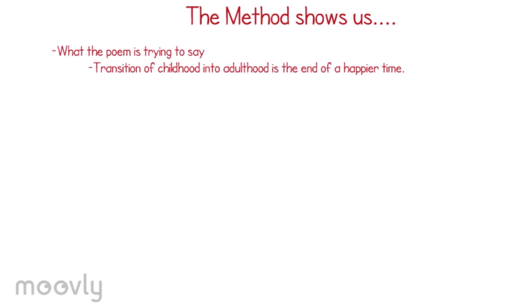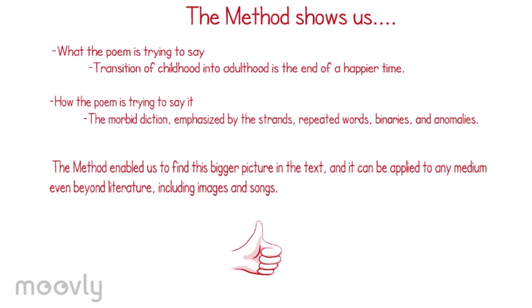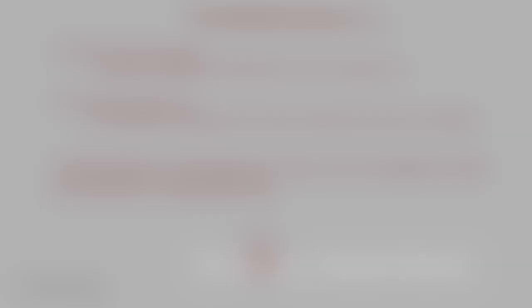Through the method, we can determine that the poem is meant to show how the transition of childhood into adulthood is the end of a happier time. The morbid diction, emphasized by the strands, repeated words, binaries, and anomalies, stresses this message. The method enabled us to find the bigger picture in the text, and it can be applied to any medium even beyond literature.